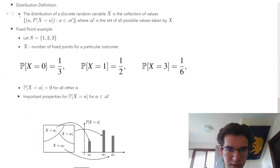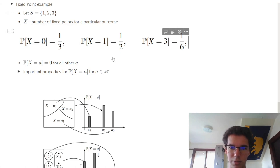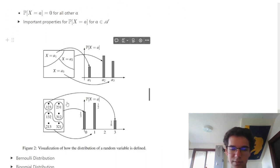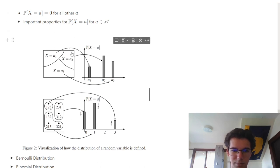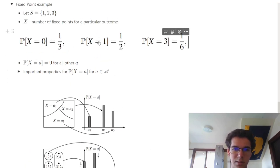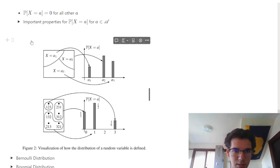Looking at the fixed point example, we let X be the number of fixed points for a particular outcome. We can have 0, 1, or 3 fixed points — we can't have 2, because if 2 students have fixed points, the last spot must also be a fixed point. The probability of 0 fixed points is 1/3 (2 out of 6 options), 3 fixed points has probability 1/6 (only one option), and 1 fixed point is 3 out of 6.